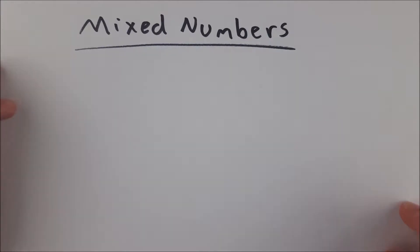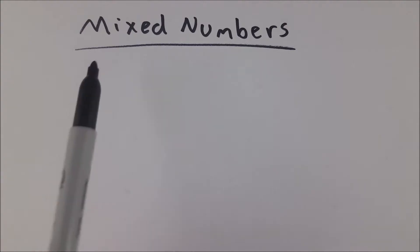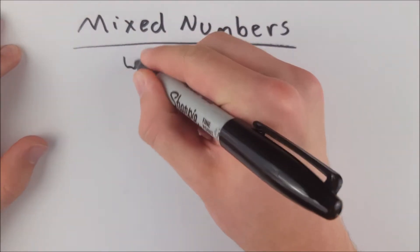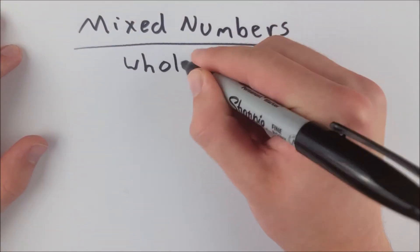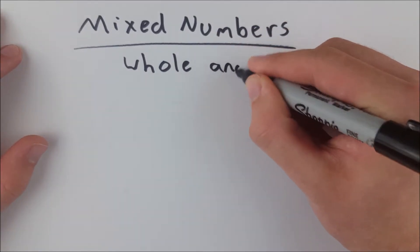So for example, let's talk about pizza consumption here because I think that's a very enjoyable topic to bring into mathematics. Let's say you've consumed three slices of pizza. Well then you wouldn't need to represent that using a mixed number because you've only got a whole, not a part as well as a whole. Let me just write that out. It's a way to represent a whole and a part.